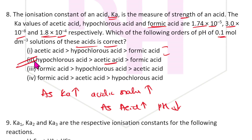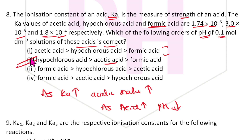Remember: formic acid has higher acidic nature and lower pH; hypochlorous acid has lower acidic nature and higher pH. The correct answer is the second option. Note: the fourth option might seem tempting but the correct answer is second one based on the pH ordering of these acids.